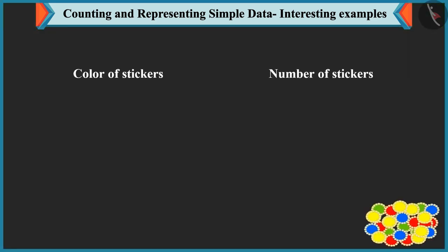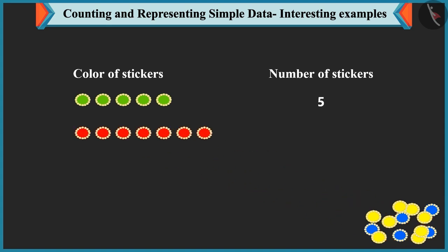I have one, two, three, four and five green stickers. Now, there are one, two, three, four, five, six and seven red stickers. So, we have to write seven against red stickers.